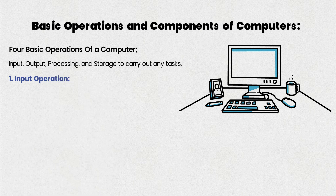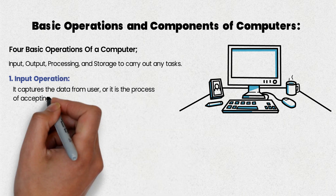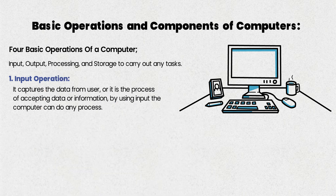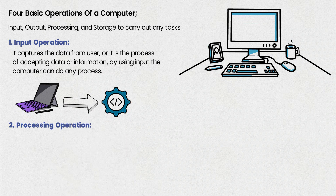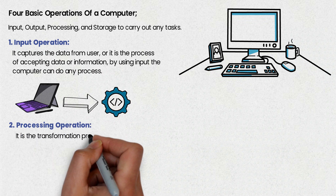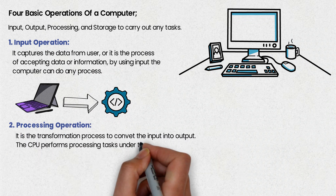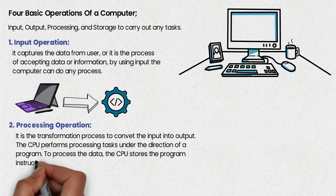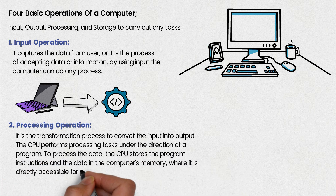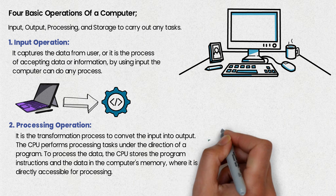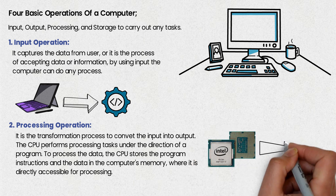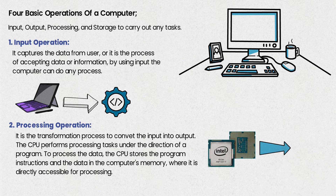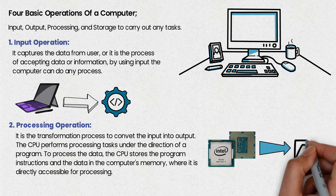Input operation captures the data from the user — it is the process of accepting data or information. By using input, the computer can do any process. Processing operation is the transformation process to convert the input into output. The central processing unit performs processing tasks under the direction of a program. To process the data, the CPU stores the program instructions and the data in the computer's memory, where it is directly accessible for processing.